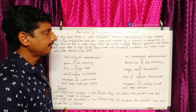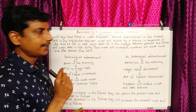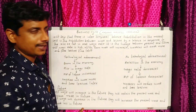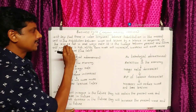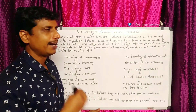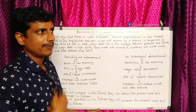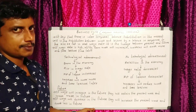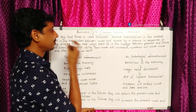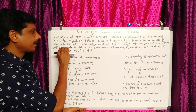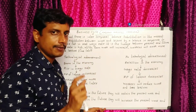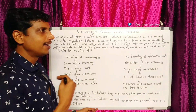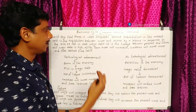It is called inter-temporal labor substitution. It is the substitution between work and leisure by labor in response to the rise or fall in the real wage rate.